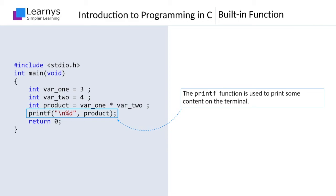For the time being, you can just assume that this function will print the content of the variable named product on the terminal. This program is not very useful in its present form. It does nothing more than the trivial task of multiplying 3 and 4.